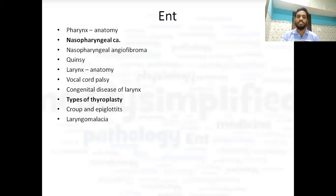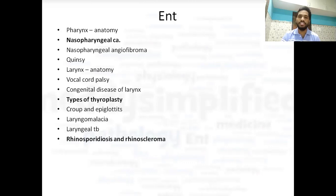Then from the congenital diseases of larynx, laryngomalacia is a very important topic — even if you don't do the other ones, just try to do laryngomalacia — and laryngeal TB. Rhinosporidiosis and Rhinoscleroma: mostly from this topic the questions are asked as 'all of the following are true about Rhinosporidiosis except' or 'all of the following are true about Rhinoscleroma except.' So make sure that you know each and everything about this topic.